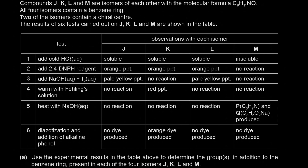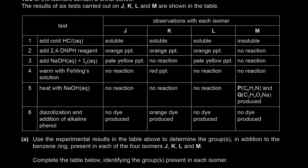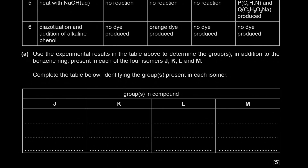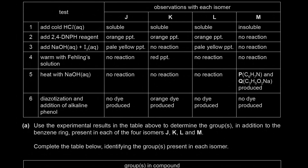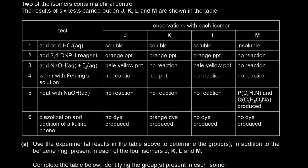The question says: use the experimental results in the table to determine the groups present in each of the four isomers J, K, L and M, and complete the table below identifying the groups present in each isomer. We're going to look at each test one at a time and figure out the groups present in each isomer based on the results.